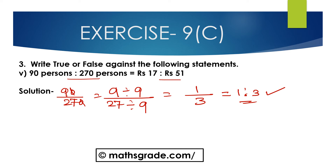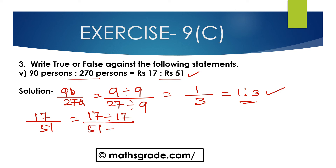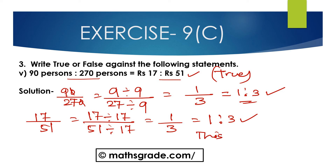Now, 17 rupees is to 51 rupees. Between 17 and 51, 17 is the common factor. Divide antecedent 17 by 17 and consequent 51 by 17. 17 divided by 17 is 1, and 51 divided by 17 is 3. That is 1 is to 3. Both are equal — 1 is to 3. So 90 percent is to 270 percent equal to 17 rupees is to 51 rupees is TRUE.